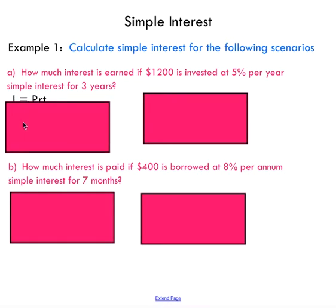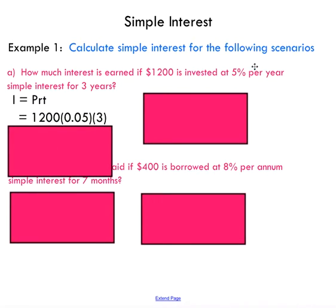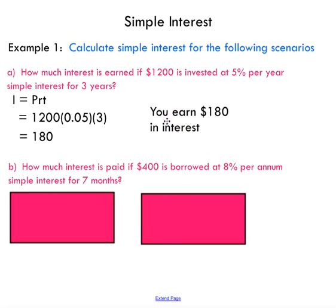We do have all that information. Looking at our formula, we need a principal amount — which we have — an interest rate — which we have — and a time — which we have. So we substitute all of those values into our formula. The percentage is expressed as a decimal by dividing by 100. Multiplying the three numbers together gives us 180, so we can conclude that in three years we will earn $180 in interest.